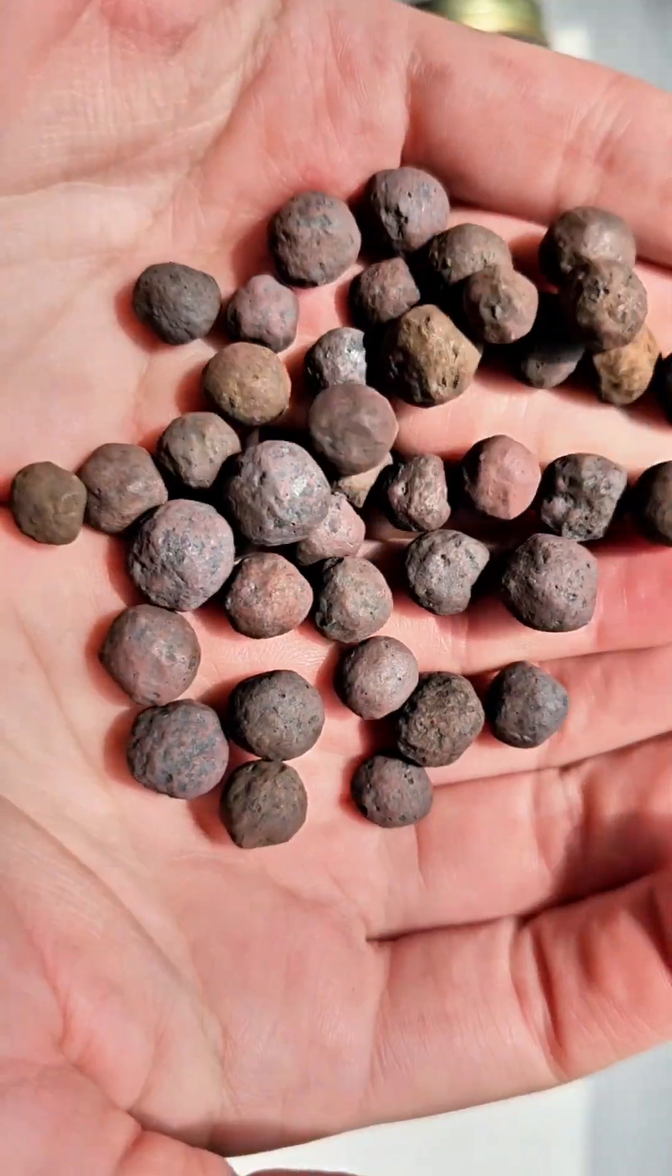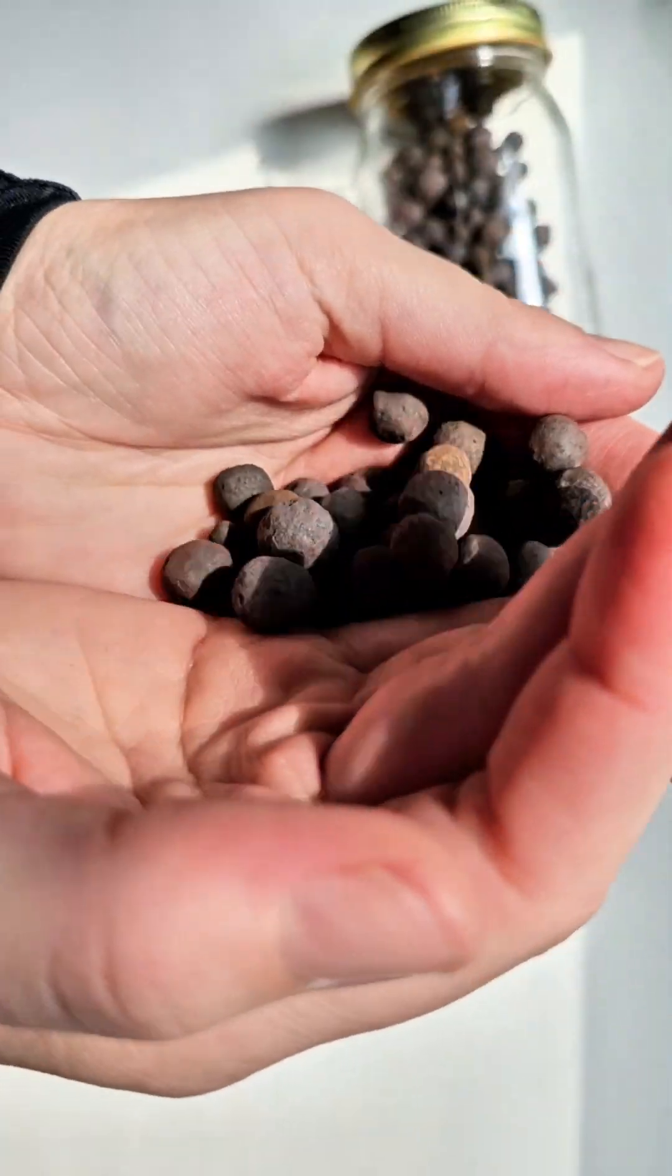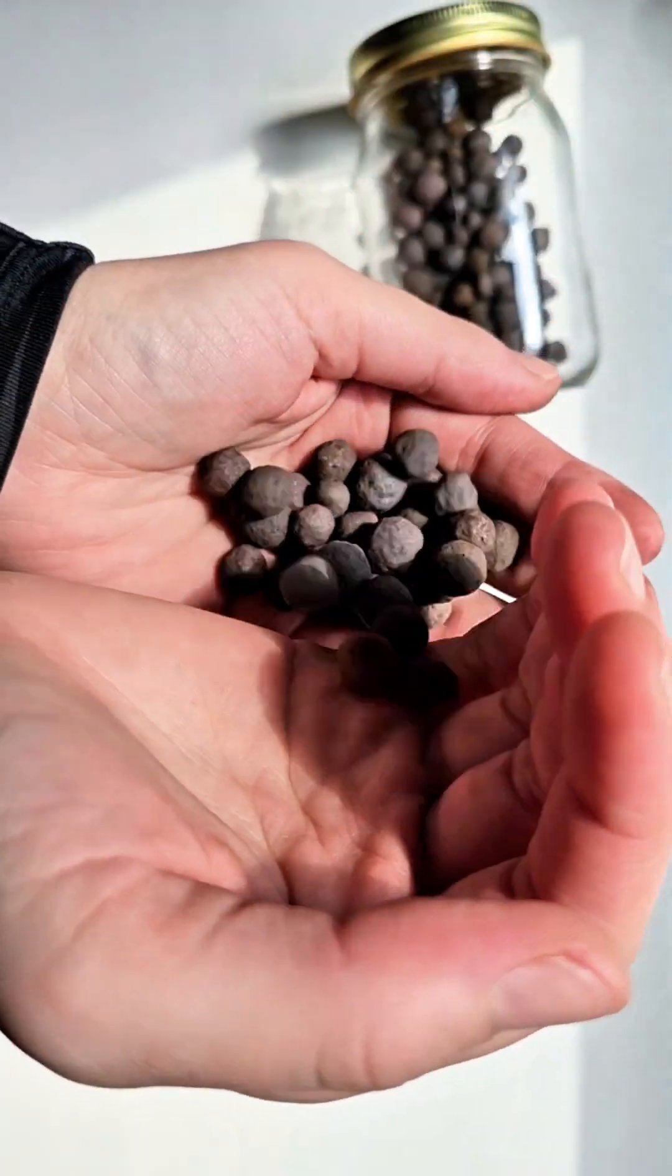This is what my balls look like up close. They are iron ore pellets. These get loaded onto giant ships and sent all over the place to get turned into things that iron is made into.